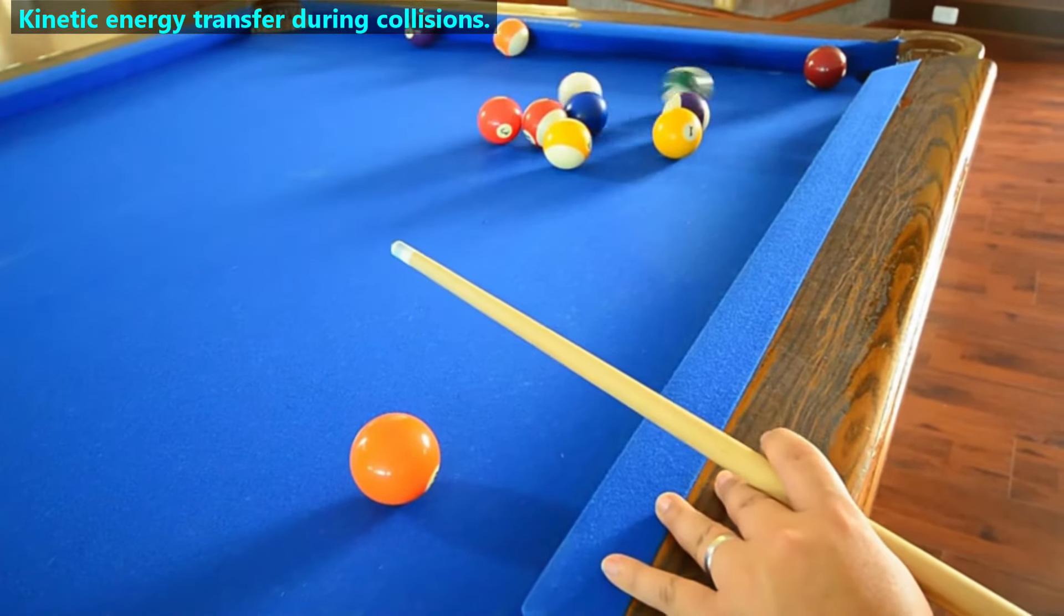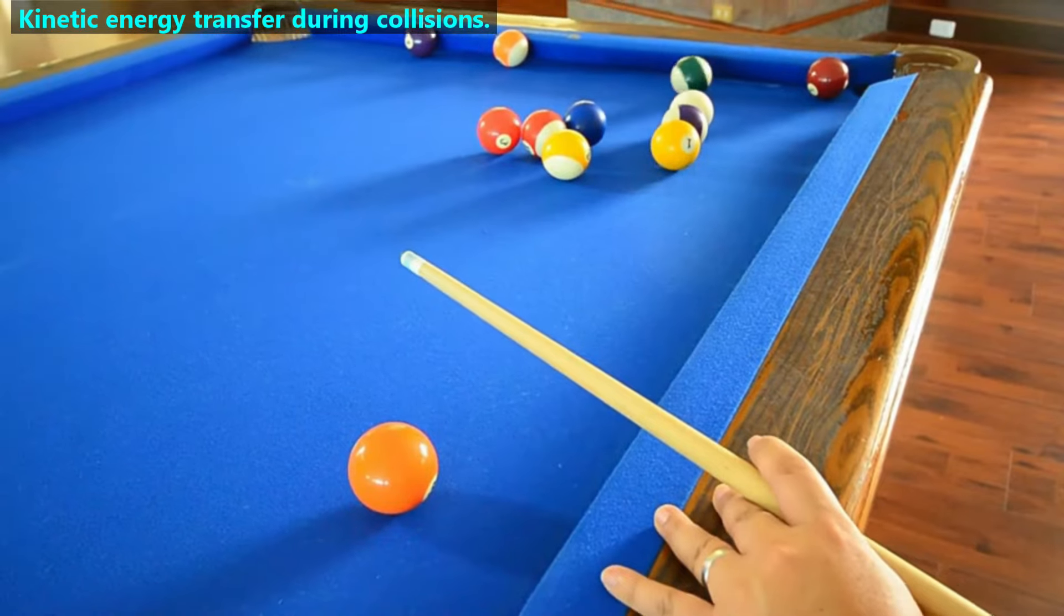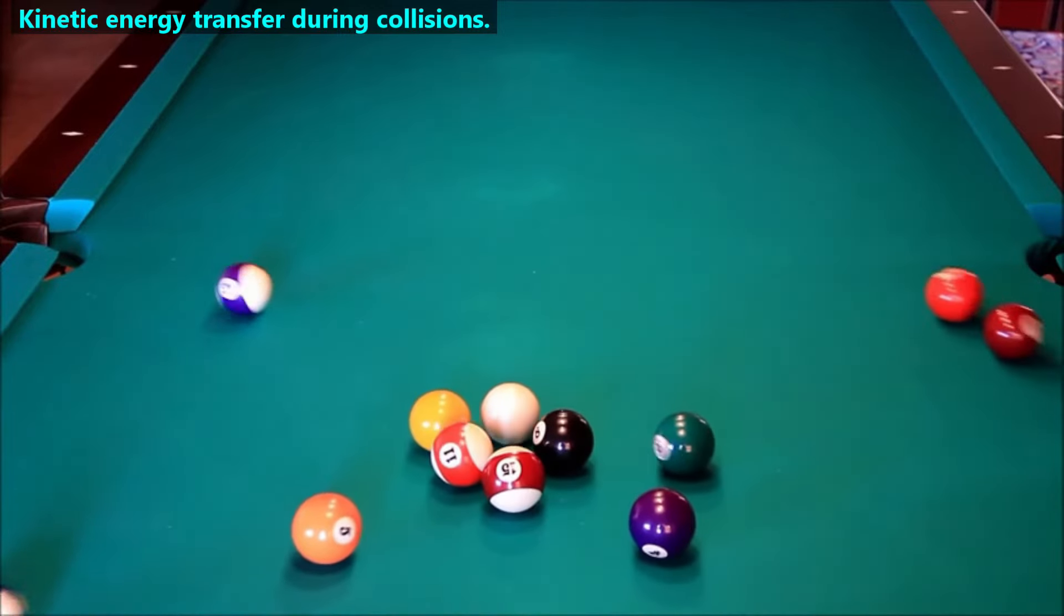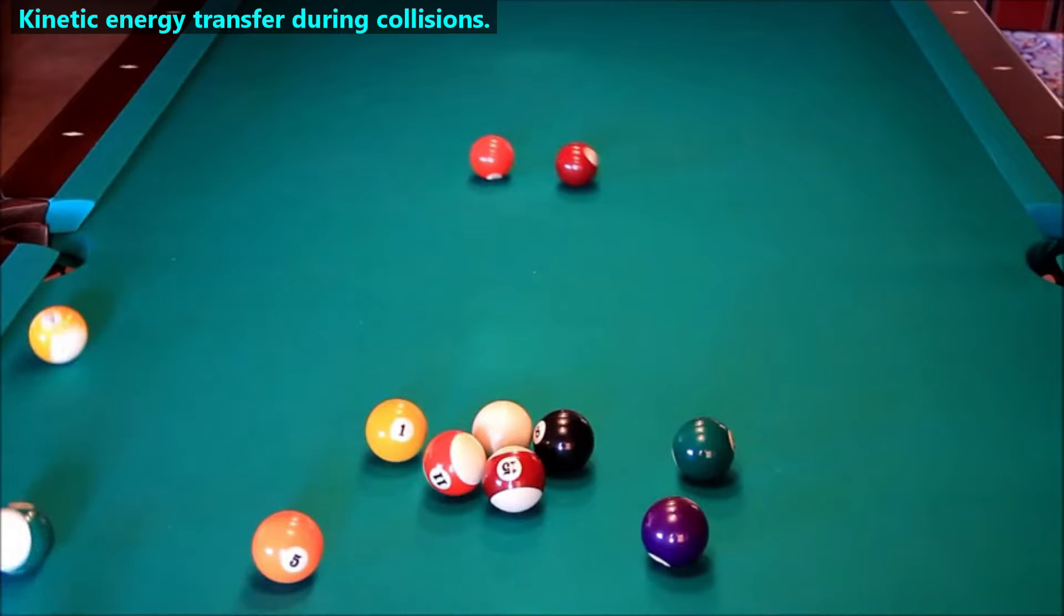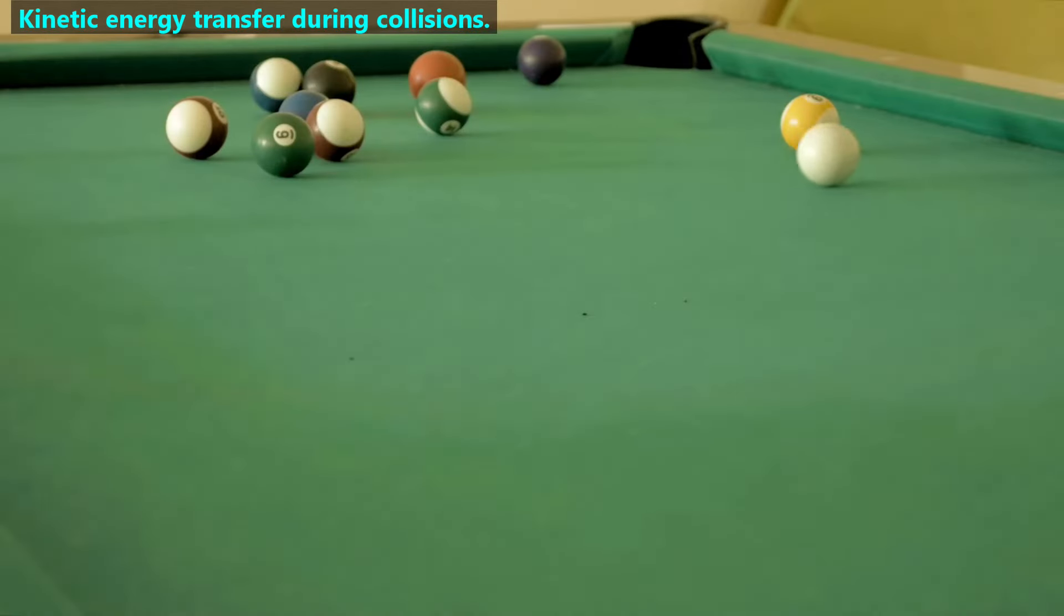This happens because the white ball gave some of its kinetic energy to the ball it hit. When a body gives some of its energy to one or more other bodies and that energy stays in the same form, then we call this an energy transfer.